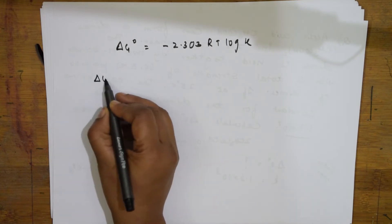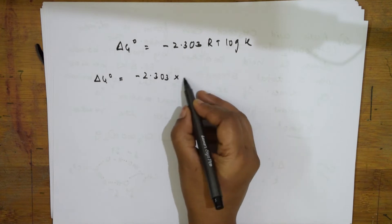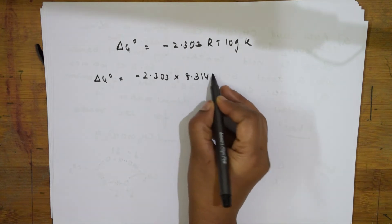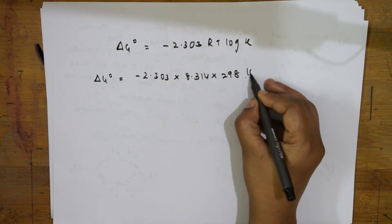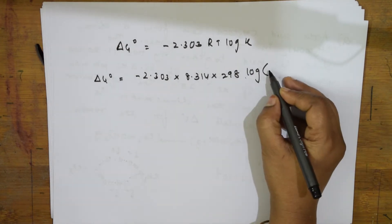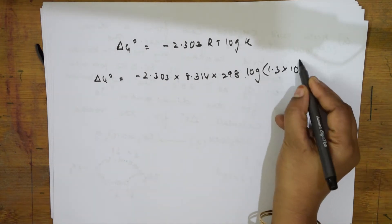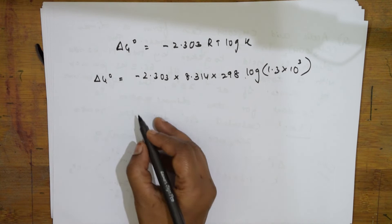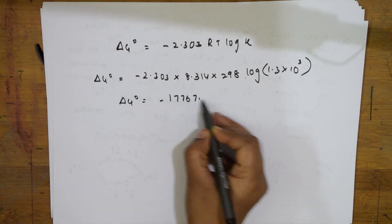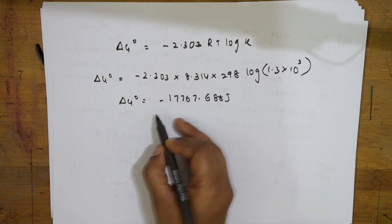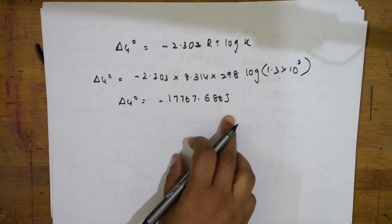Substituting: ΔG° = −2.303 × 8.314 × 298 × log(1.3 × 10³). When I solve this, I get a value of −17767.688 joules. We have already calculated this, so I wrote it directly. Now I have the delta G naught value.